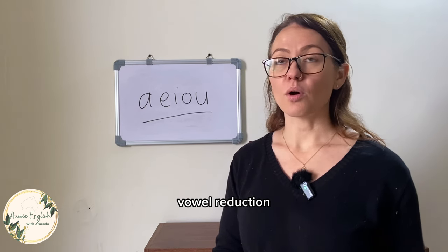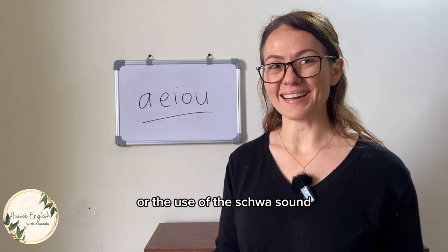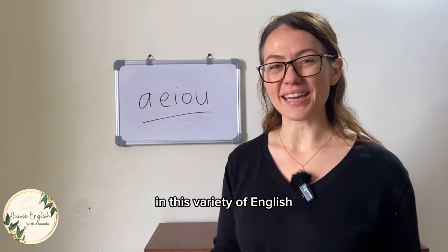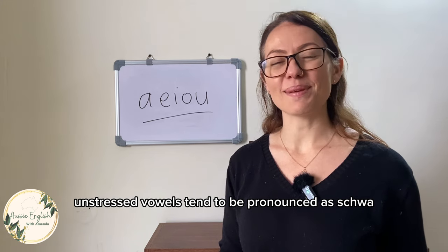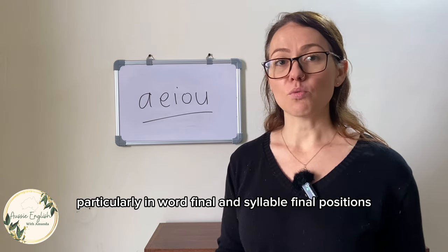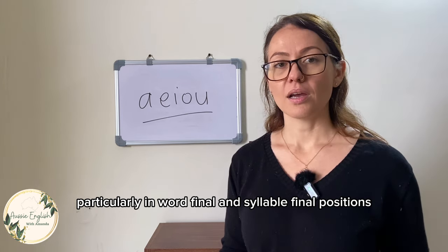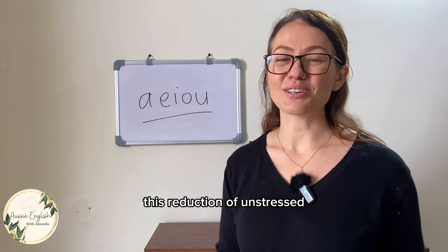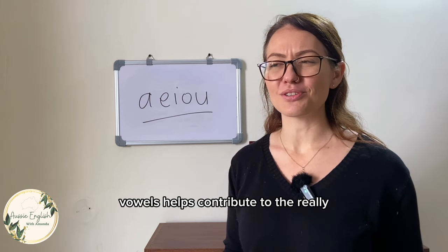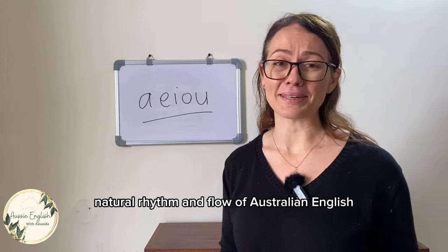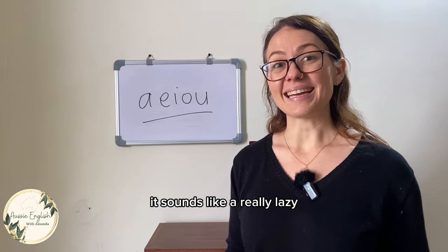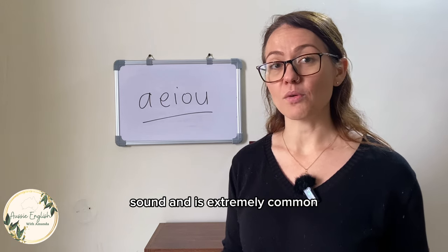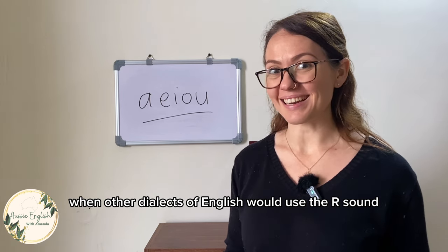Vowel reduction, or the use of the schwa sound, plays a really significant role in Australian English connected speech. In this variety of English, unstressed vowels tend to be pronounced as schwa, particularly in word-final and syllable-final positions. This reduction of unstressed vowels helps contribute to the natural rhythm and flow of Australian English. It sounds like a really lazy unstressed sound and is extremely common where other dialects would use the R sound.